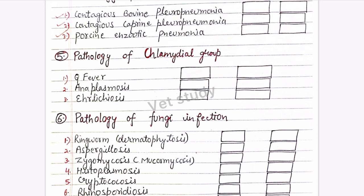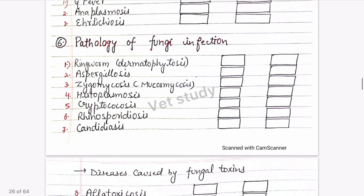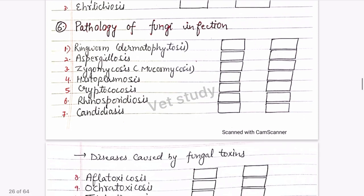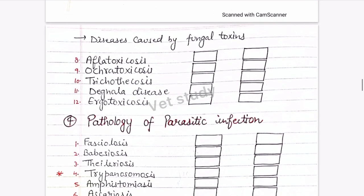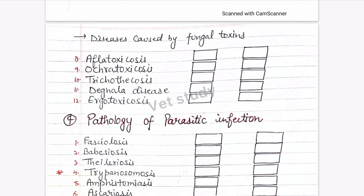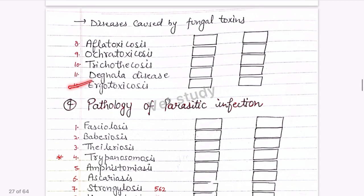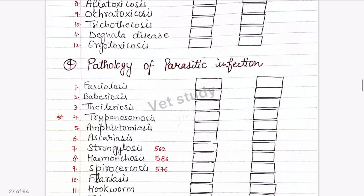Corynebacterium is not very important. Campylobacteriosis is not important. Salmonellosis and colibacillosis are short-answer topics. Pathology of mycoplasma infection can be asked in short — 4 marks. Contagious bovine pleuropneumonia and contagious caprine pleuropneumonia are two important diseases. In the Chlamydial group, Q fever, anaplasmosis, and Ehrlichia are important. Aspergillosis is the most important fungal infection. Ringworm and ergotoxins can also be seen.